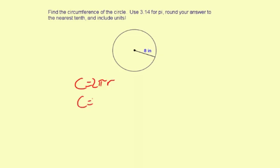So for our circle, c equals 2, and then for pi they say use 3.14, and then for the radius r it's going to be 8 inches.